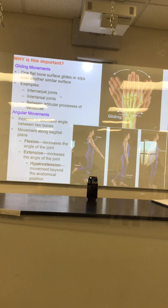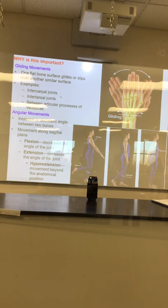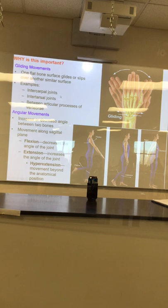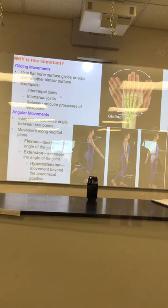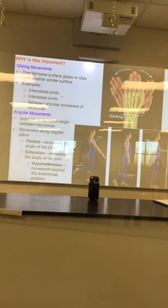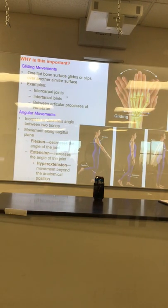We use these degrees to better understand the joint, and we use this on a daily basis in certain medical fields. Gliding movements are things gliding past one another; angular movements are like flexion and extension — decreasing or increasing angles.